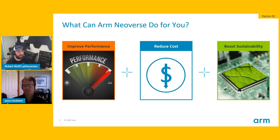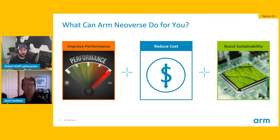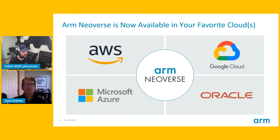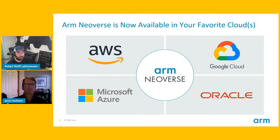ARM Neoverse is our server-grade chipset. ARM can provide you with increased performance, reduced costs, and it can boost sustainability, which is a huge global effort at ARM. You can find ARM in all of these different clouds — AWS, Google, Microsoft, and Oracle — and they all have various free tier programs available.